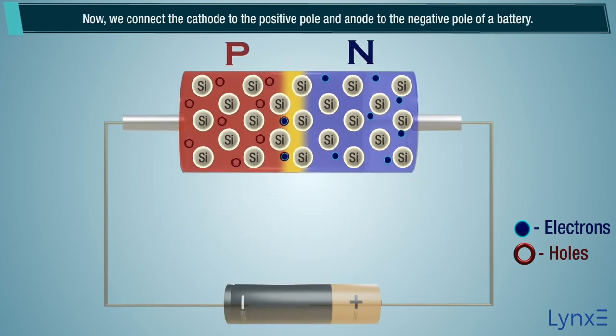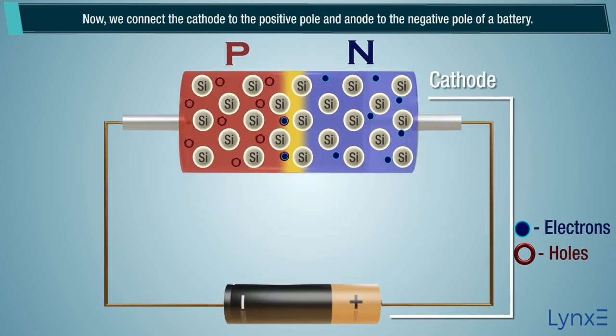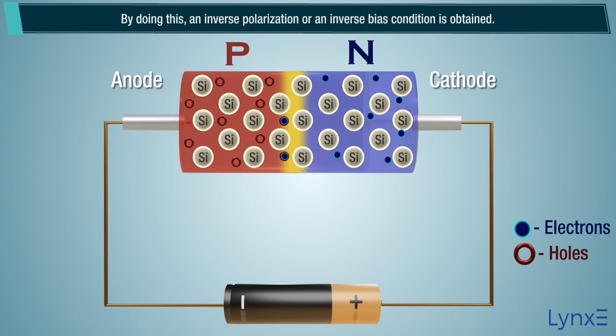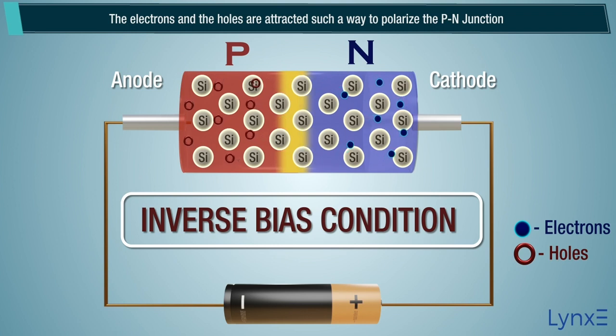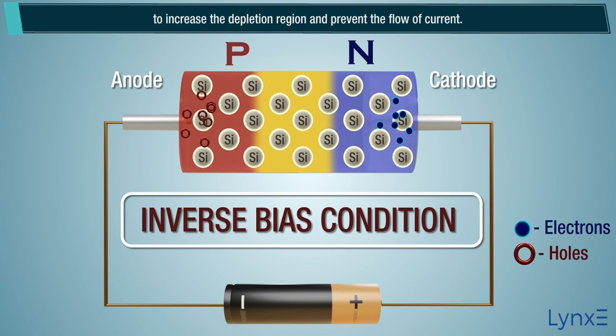Now, we connect the cathode to the positive pole and anode to the negative pole of a battery. By doing this, an inverse polarization or an inverse bias condition is obtained. The electrons and the holes are attracted such a way to polarize the P-N junction, to increase the depletion region, and prevent the flow of current.